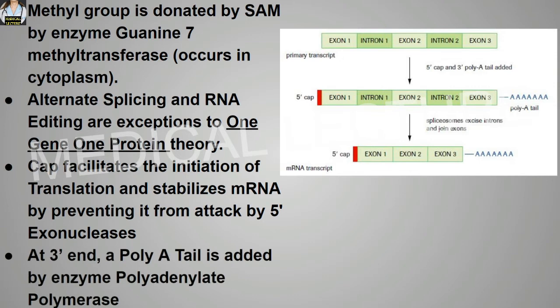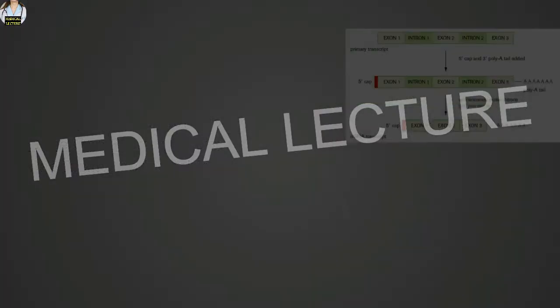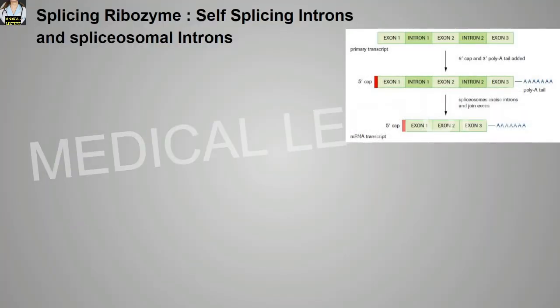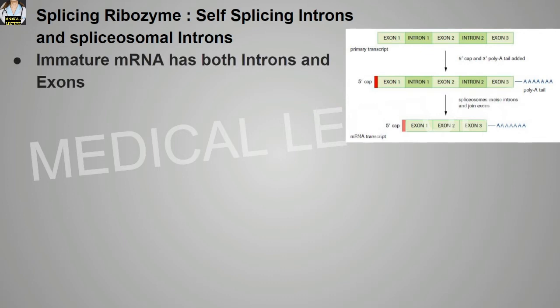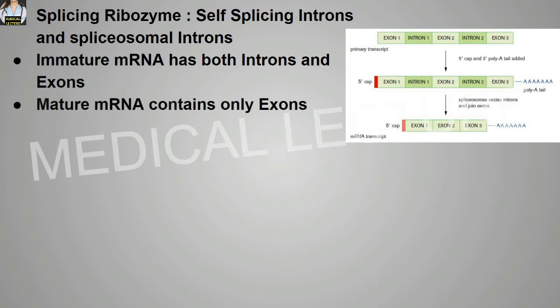At the 3' end, a polyadenylate tail is added by the enzyme polyadenylate polymerase. Splicing ribozymes are the self-splicing introns and spliceosomal introns. Immature mRNA has both introns and exons, while mature mRNA contains only exons.